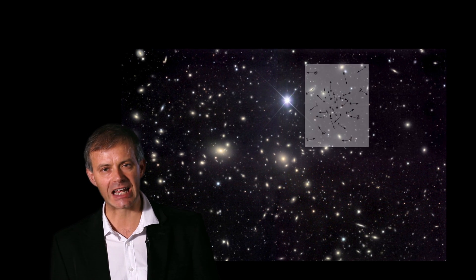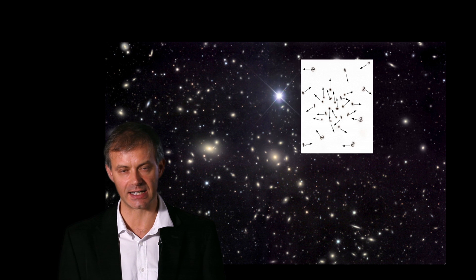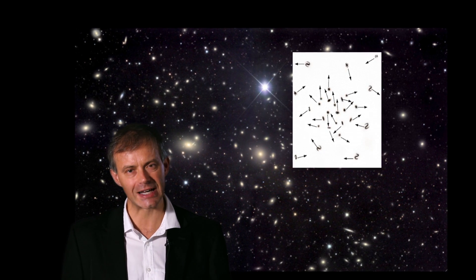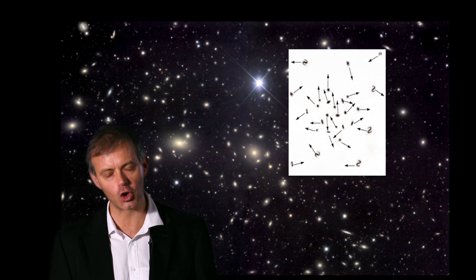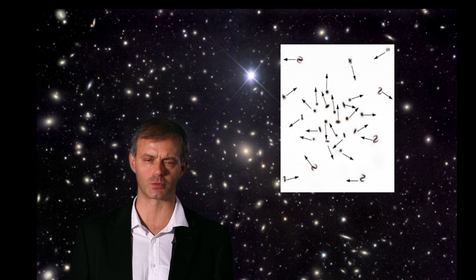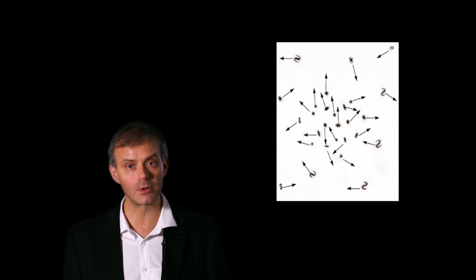While observing the Coma Cluster, which is the largest visible from the Earth, Zwicky detected that the peculiar velocities of the stars in the cluster, that is, the velocities not due to the cosmic expansion, but the ones produced by the gravitational influence of the whole cluster, were very high, about 1000 km per second.